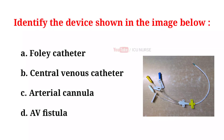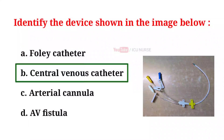Identify the device shown in the image below. A. Foley catheter. B. Central venous catheter. C. Arterial cannula. D. Avifisula. And the correct answer is C. Central venous catheter.